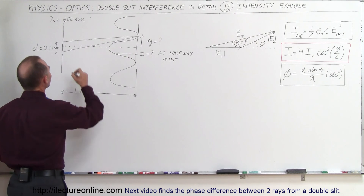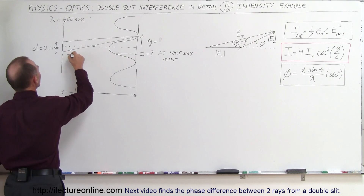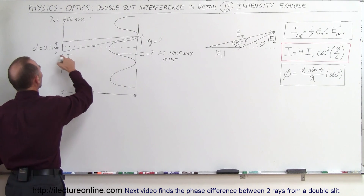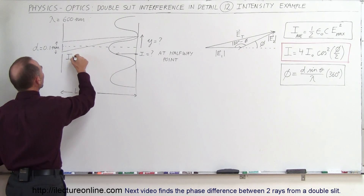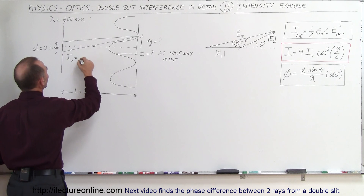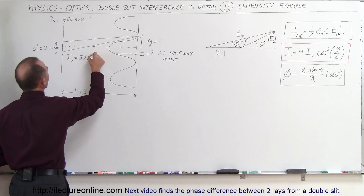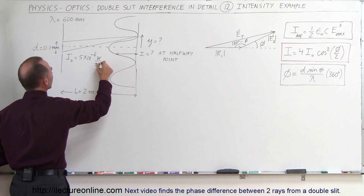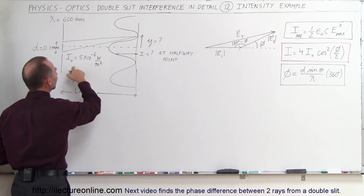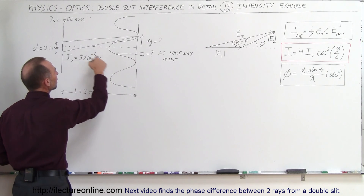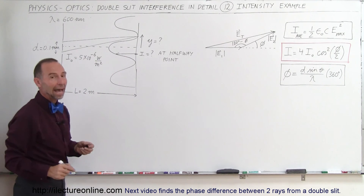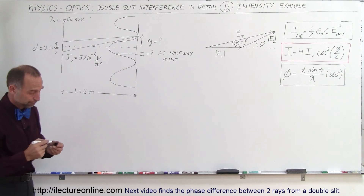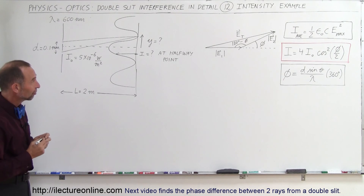Let's say that the intensity of a single beam coming in is equal to 5 times 10 to the minus 6 watts per square meter. Based upon that intensity, what will be the intensity at that location?